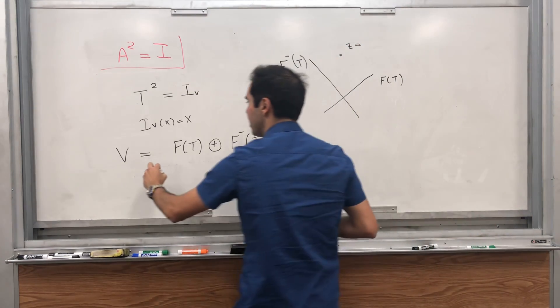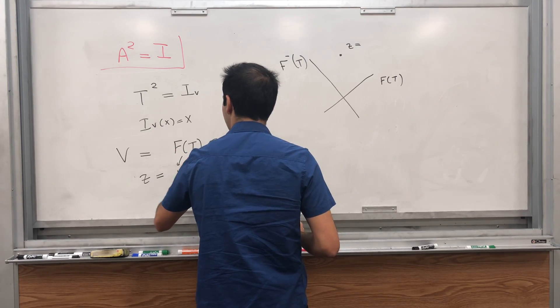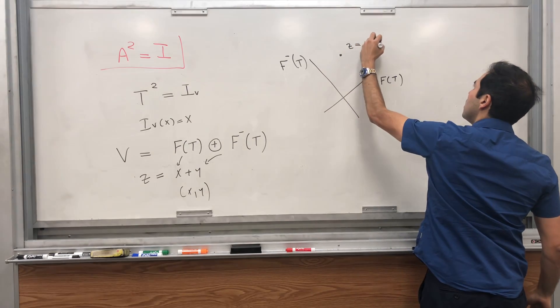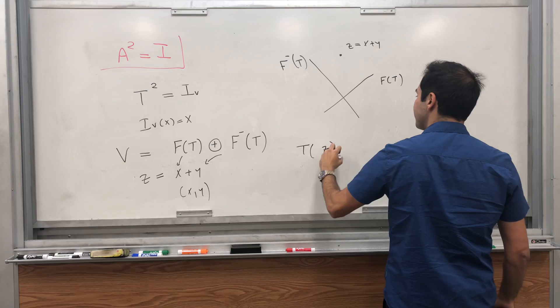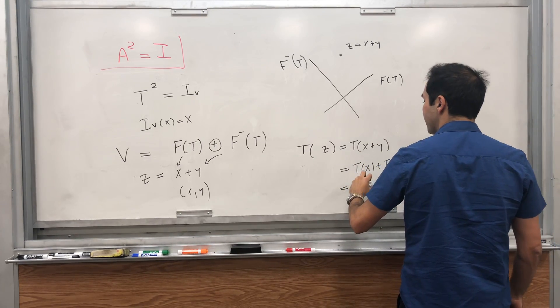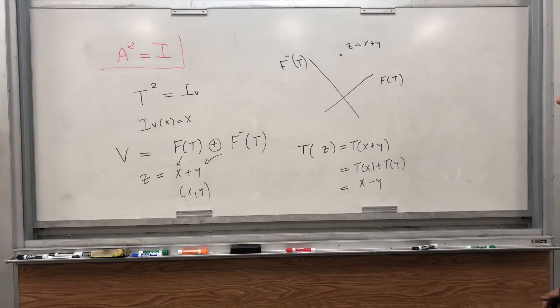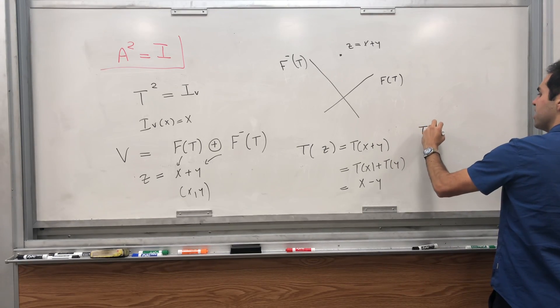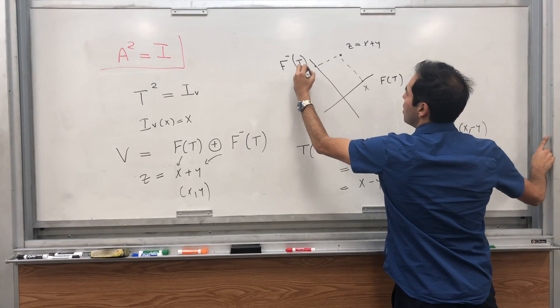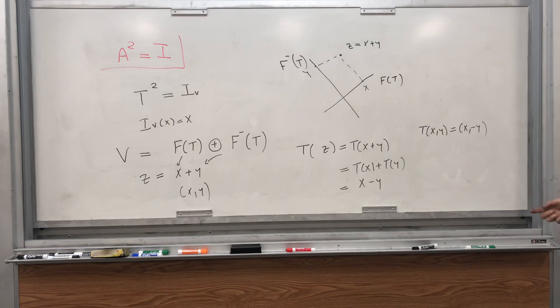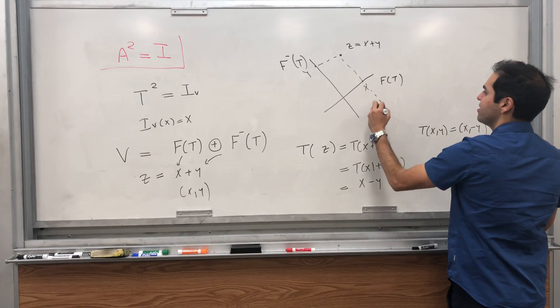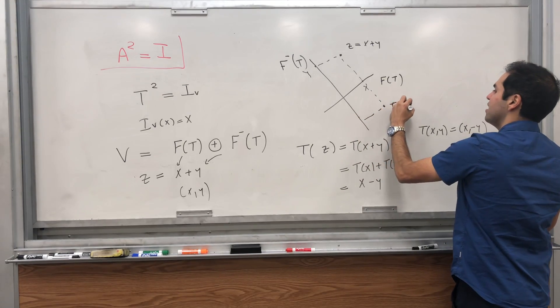And then what does T do to any vector z? Remember any vector z you can write it uniquely as a sum of two vectors, one in x and the other one is y, so think of sort of x comma y. Then what does T do? T takes z as its input, so T(x + y), and that is T(x) + T(y). And that becomes, because it's a fixed point we have x, and because it's an anti-fixed point we have minus y. So in other words the way to visualize this, think of T(x, y) is x comma minus y. So what T does, it literally reflects the point z on the F(T)-axis.